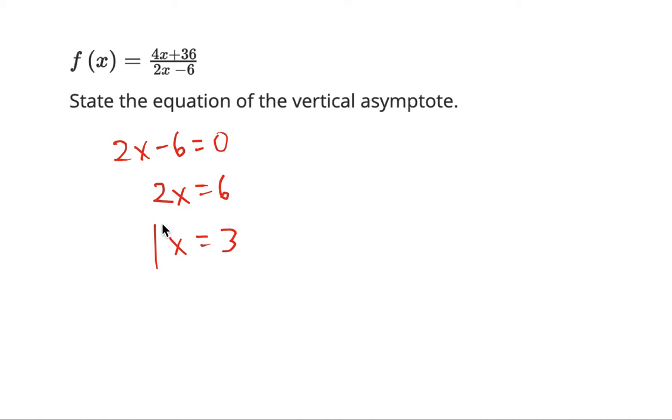This is the equation of the vertical asymptote. For an equation, we need to have it as x equals 3. You can't just say the number 3. That would not suffice. You have to state this.